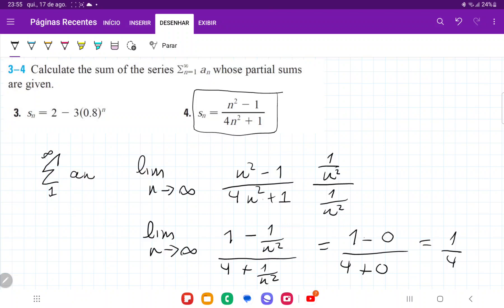So in practice, this means that if we add the sequence, if we add terms from 1 all the way out to infinity, the sum is going to get closer and closer to 1 fourth.